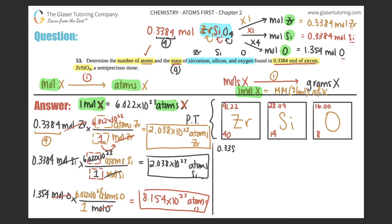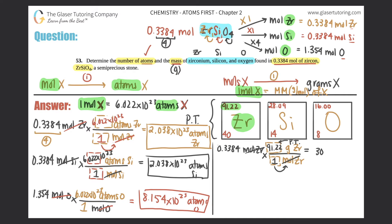For zirconium: 0.3384 moles of Zr — moles of Zr on the bottom, grams on top. One mole of zirconium equals its molar mass from the periodic table. You take the larger of the two numbers — the atomic mass, not the atomic number — which is 91.22. Moles cancel out. 0.3384 times 91.22 equals 30.87 grams of zirconium (four sig figs).